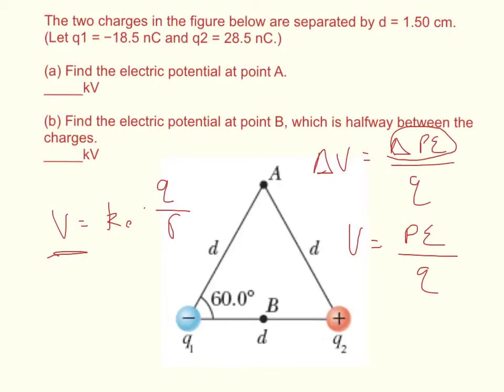Now the next thing to remember is that electric potential is a scalar quantity. So if we want to find it, all we have to do is find the electric potential from Q1 to point A and then find the same from Q2 to point A, and then just add them together. There is no vector sum. We don't have to take the cosine or the sine of an angle or anything like that. We just have to add them together.